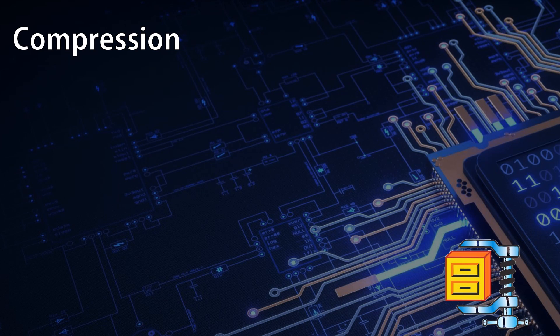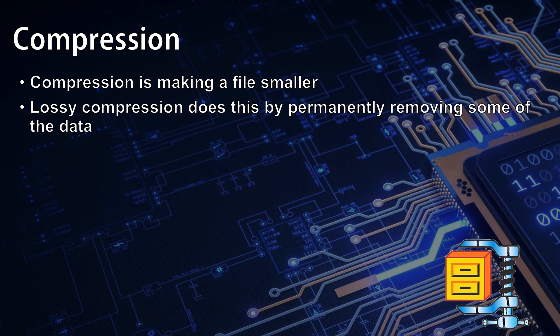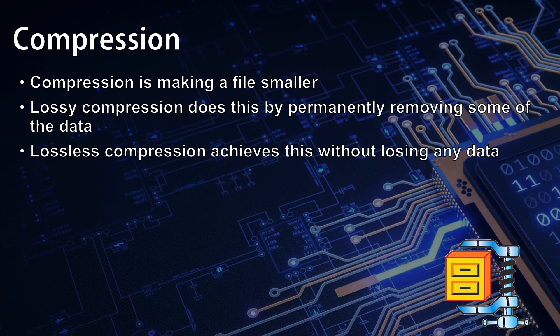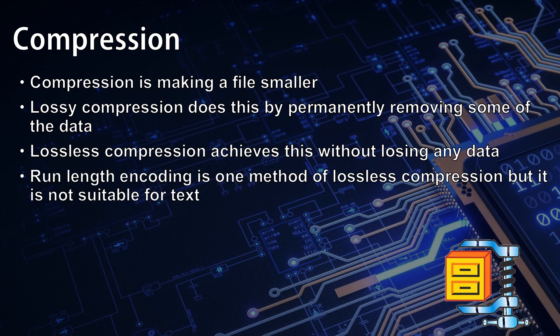So to start off with our recap: compression is the process of making a file smaller in size. Lossy compression does this by permanently removing some of the data. Obviously, with a text file, this would be a problem because when it's decompressed, you can't get the exact same data back again. Lossless compression achieves compression without losing any data. We learned at GCSE about run-length encoding — it's one method of lossless compression, but it's not suitable for text because it needs runs of the same character to happen one after each other.